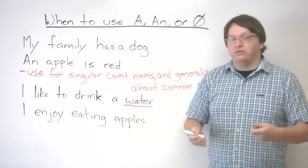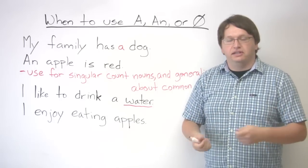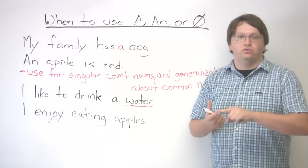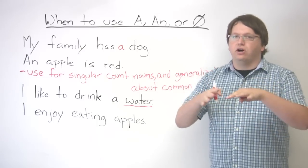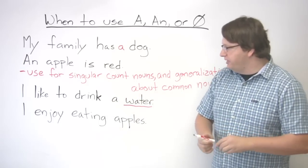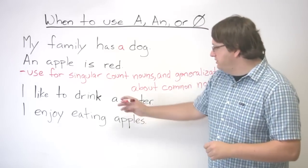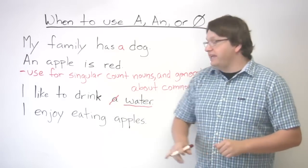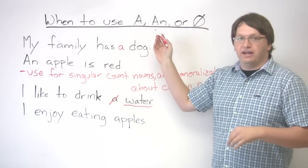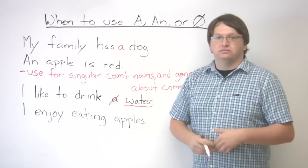No, water is a non-count noun. You cannot count water, just like you cannot count electricity. Electricity is another example of a non-count noun. You can't say one electricity, two electricity. It's all electricity. Okay, so in this case, we're looking at water, right? So I like to drink a water. No, when you have a non-count noun, you do not use an article. You do not use a or an, the indefinite article. Okay, so you just say, I like to drink water.